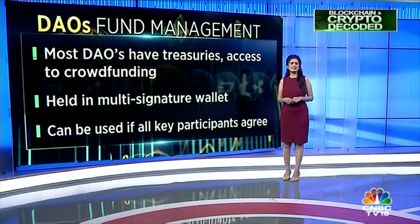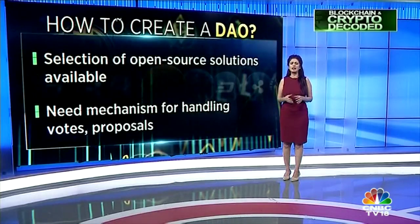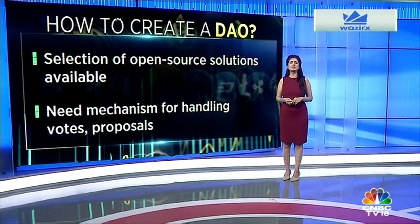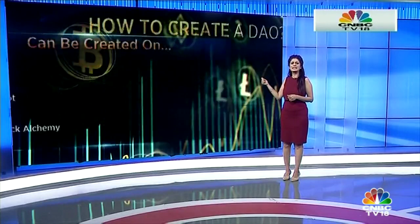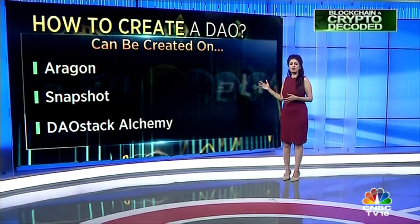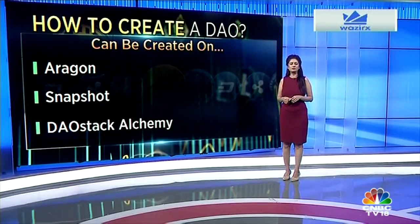To create your DAO, there is a selection of open-source solutions available. On the technical side, you'll also need a mechanism for handling votes and proposals. Aragon is one popular choice for the Ethereum blockchain. Snapshot is another that works over multiple blockchains. DAO Stack Alchemy is a tool for creating DAOs on Ethereum and Gnosis Chain.